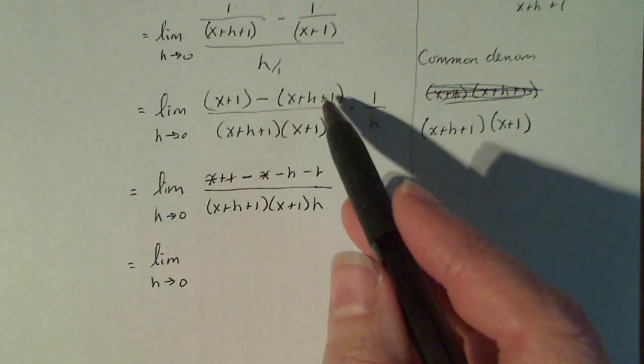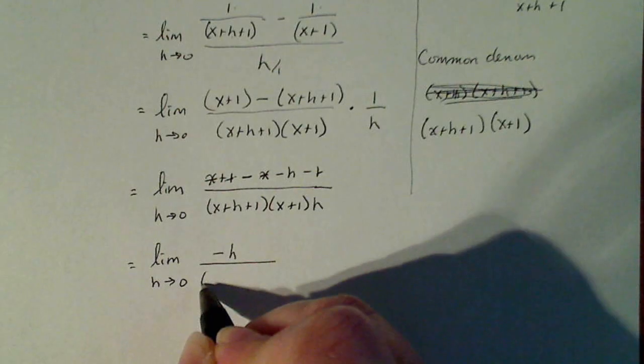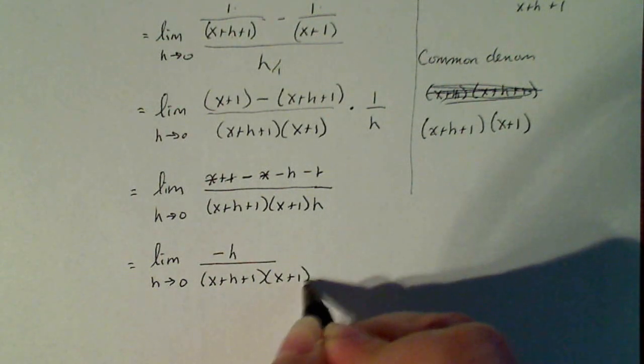See how important that was to distribute that negative there? Because this is -h on the top. And the denominator is (x+h+1)(x+1) times h.